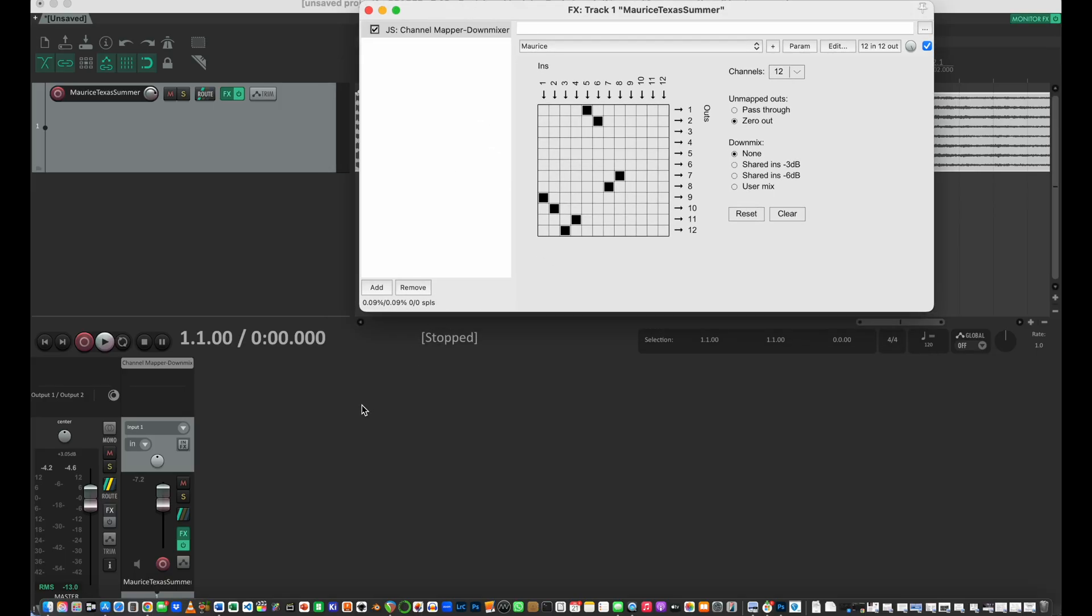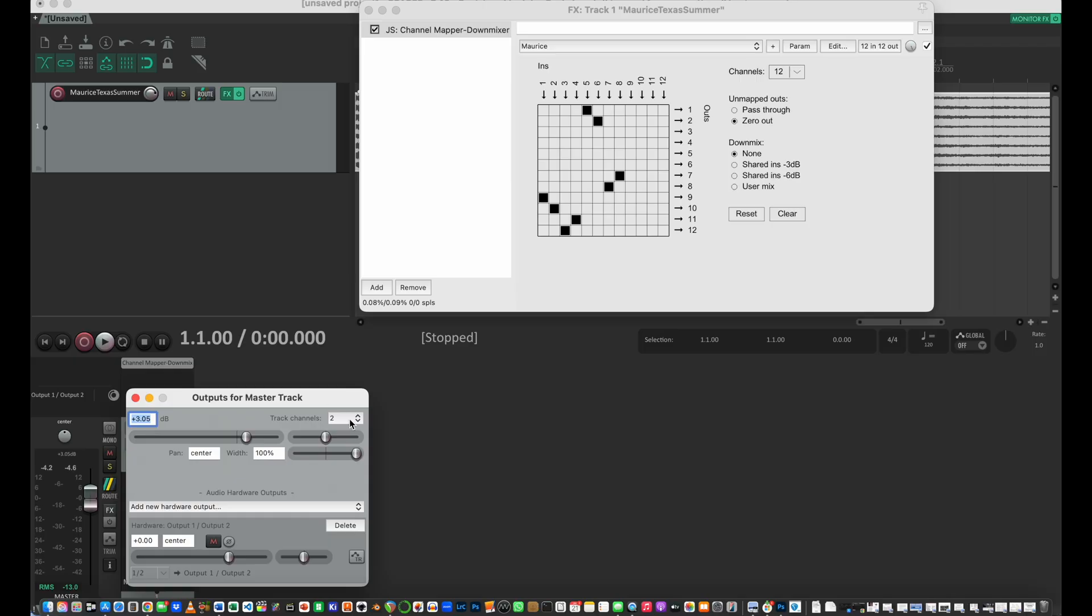So the other thing that we need to do, because this will mess you up if you haven't done it, and once again, I'm on my MacBook Pro, not my Mac Studio. So if I go to the routing here, I only have two track channels on the master bus, which means once again, we're only going to get two channels out.